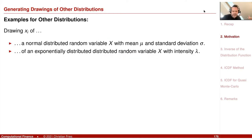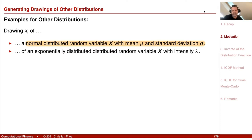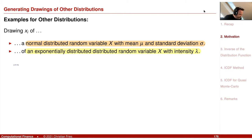Examples for such distributions include the normal distribution — a normally distributed random variable X with mean and standard deviation as parameters. Or for example, an exponentially distributed random variable with intensity parameter lambda. Log-normal would be another example. Or for example, a gamma distribution also sometimes appears.